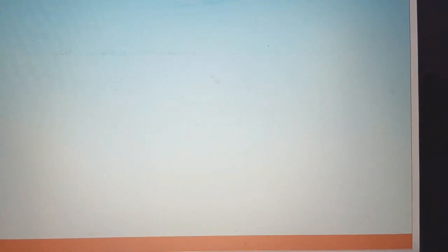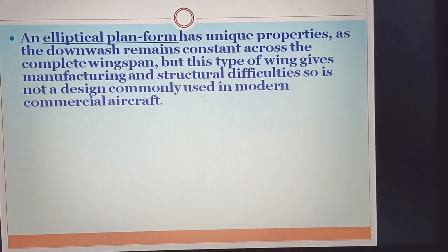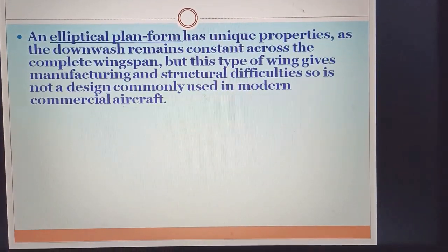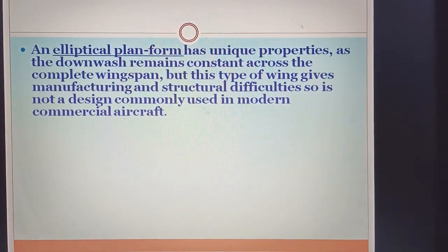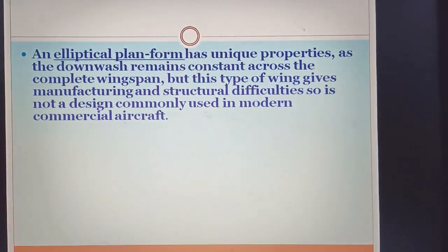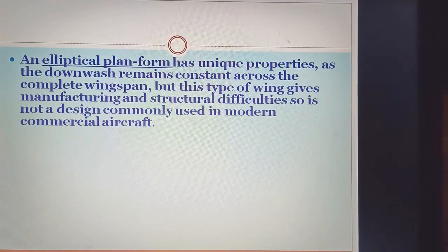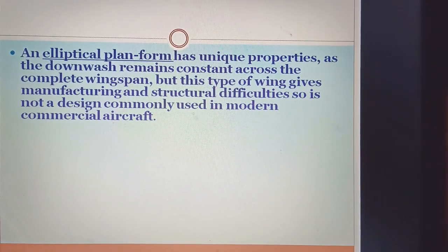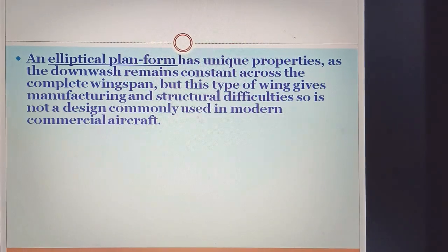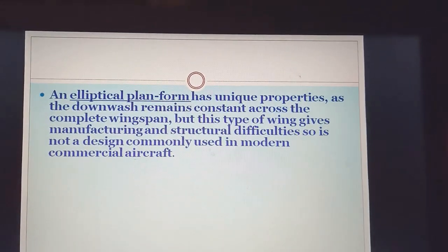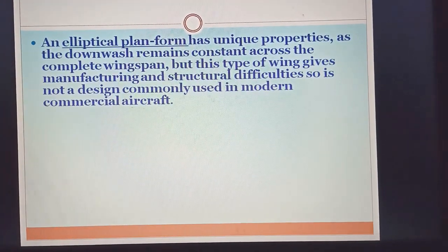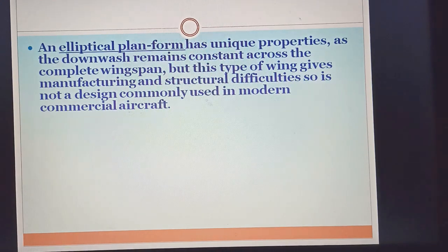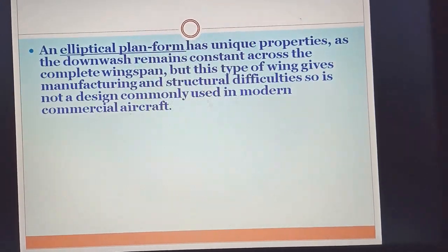Rectangular planform is not preferable since induced drag is high. Another type is the elliptical planform, which we don't prefer in commercial aircraft, but it is worth discussing. With an elliptical planform, the downwash angle epsilon is constant across the entire wing span, meaning induced drag is minimized.